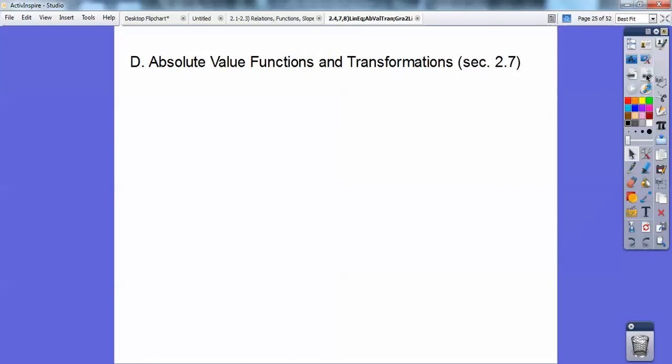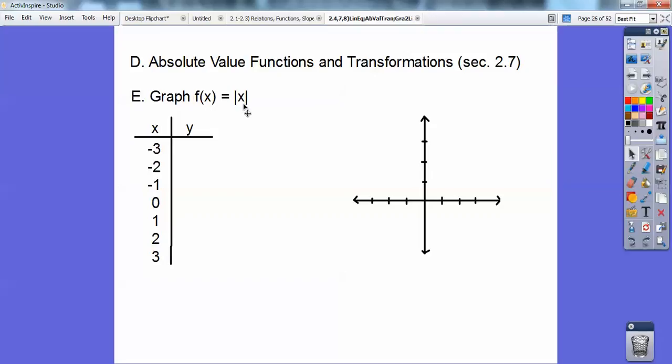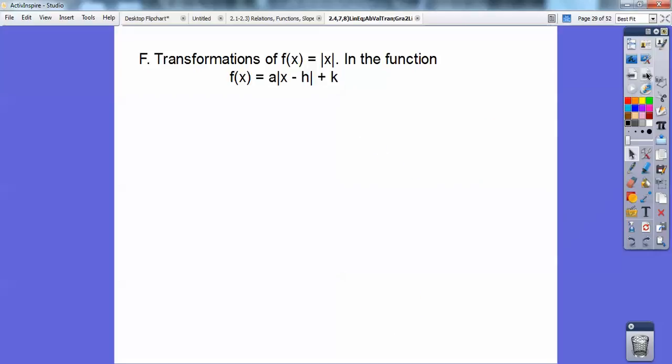Absolute value functions and transformations. This is section 2.7. Remember when you graph absolute values, when I plug in -3 right here, this says y equals the absolute value of x. What's the absolute value of -3? It's positive 3. Absolute values are like, I call them negative choppers. They take away the negatives. The absolute value of -2 is positive 2. Those are all the absolute values, and then there's the graph. An absolute value is going to graph a V every single time. And if the negative was in front of that, then it would just flip it upside down. It's symmetric across the x-axis when it's negative.